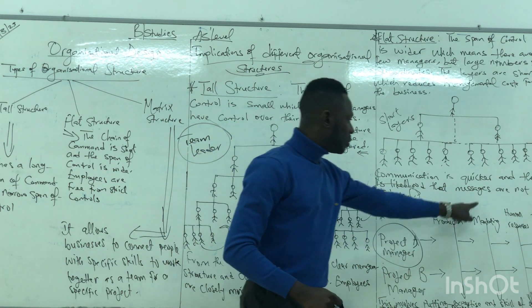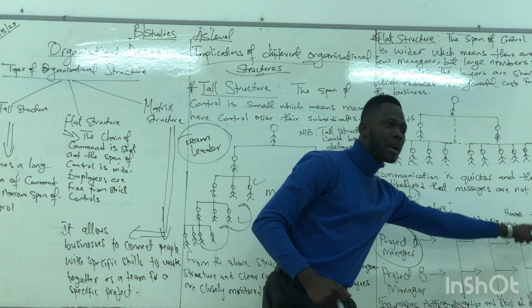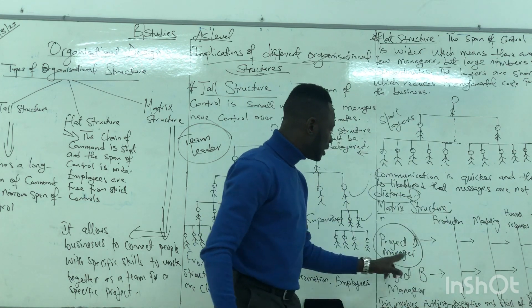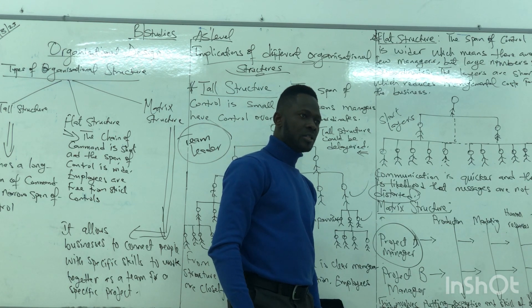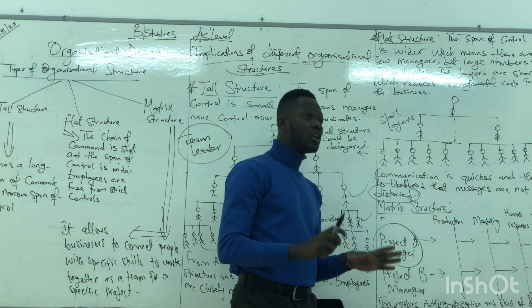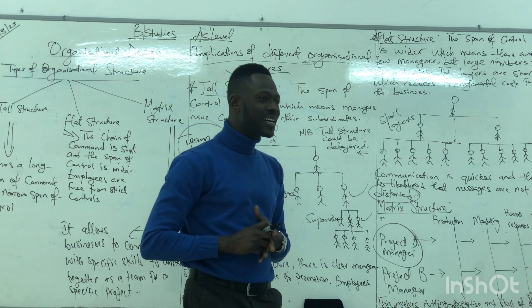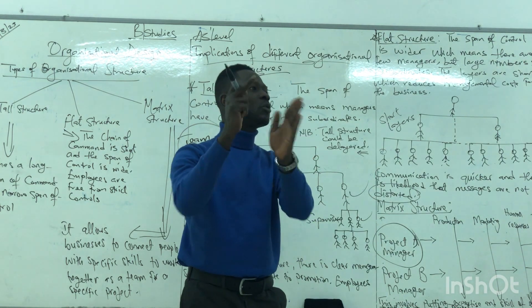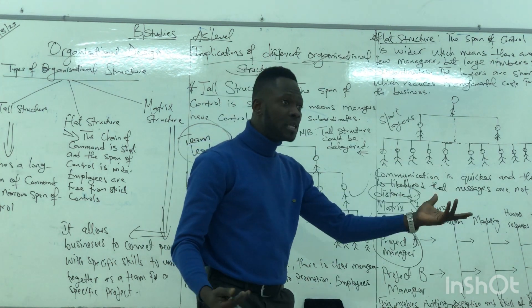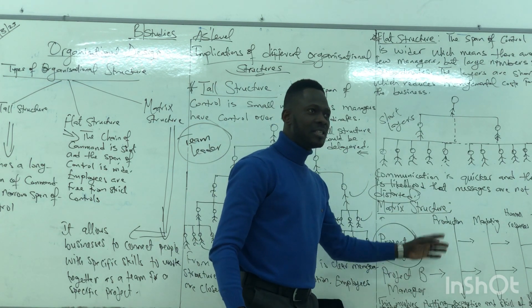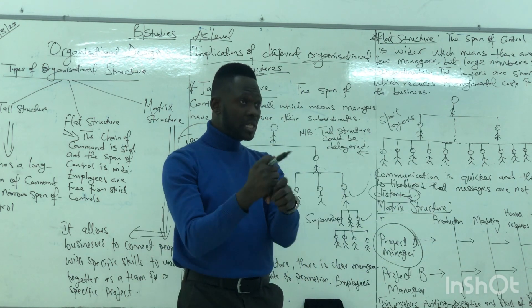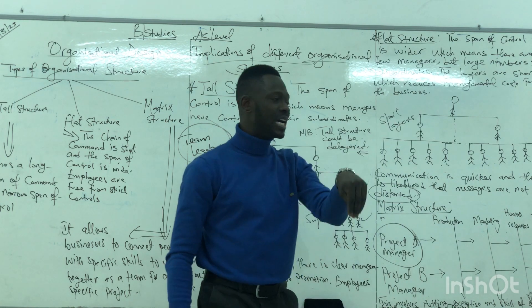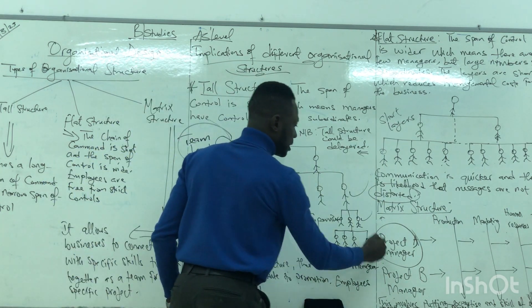In a matrix structure, it is based on the expertise of individuals — what each person can do best. We take the best from each area and put the team together to complete the projects. There is a project manager who acts as the team leader. We need someone from production, someone from marketing, someone from human resources, someone from accounting — each contributing the skills they have. In matrix structure, you don't have directors; you have a team leader or project manager.